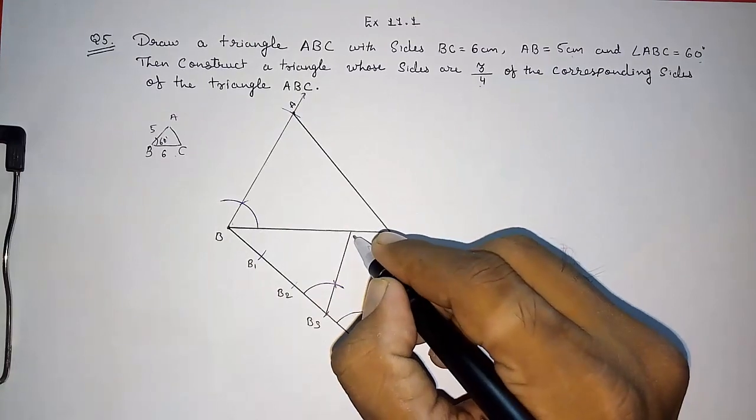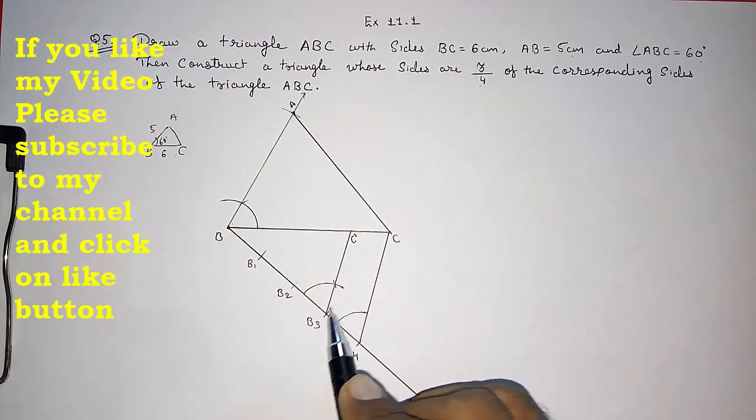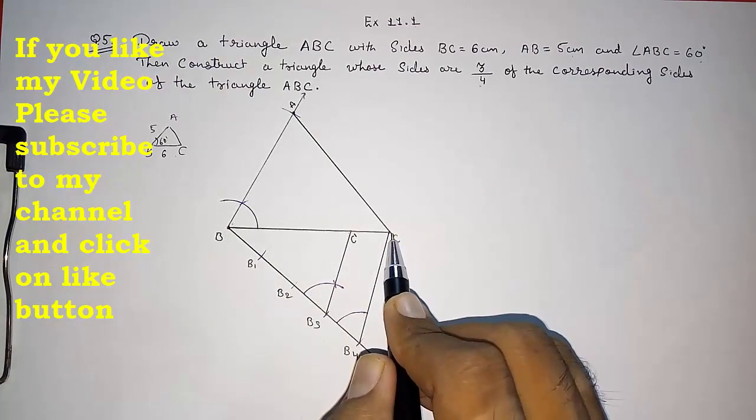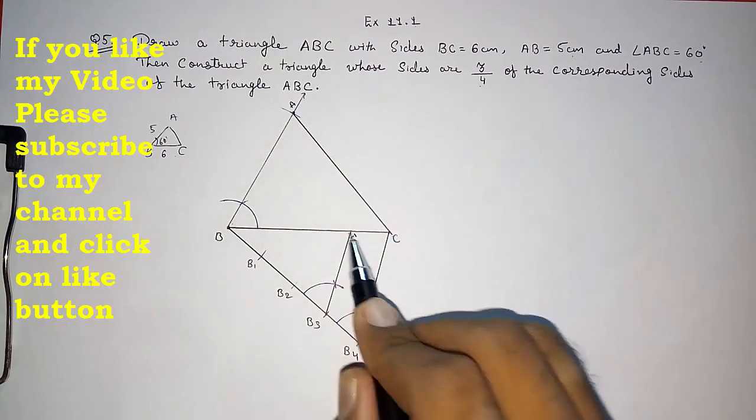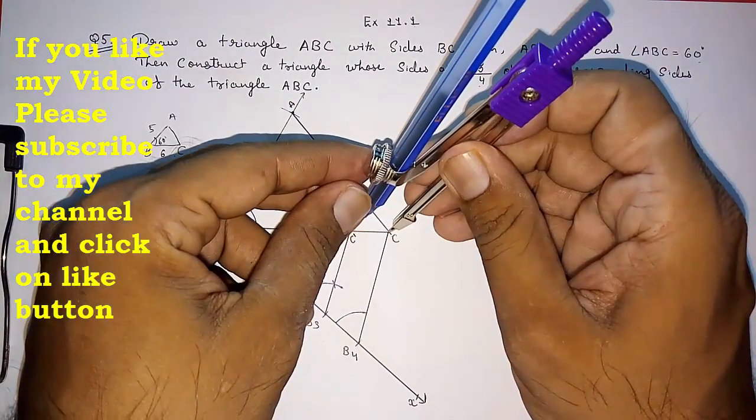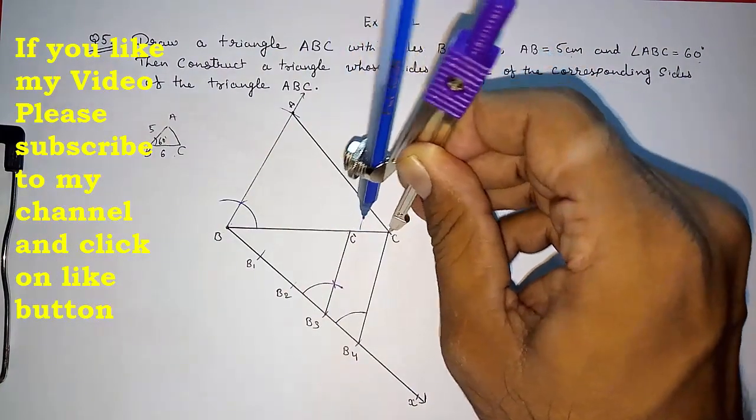This will be our point C dash. This was C. This was C dash. Now we know this is the 3 part. And this BC is 4 part. So again now I have to draw a line parallel to this AC from C dash. But that should be also parallel. And for making parallel we need corresponding angle sequence. So look here I am drawing an arc.